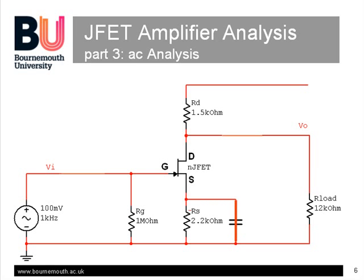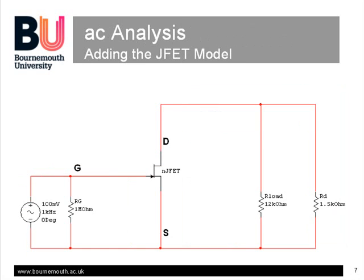Short-circuiting the source bypass capacitor shorts out the source resistor too. And finally, the power supply capacitance provides a short circuit path to signals, so we can connect the top of the drain resistor down to ground. We are left with this circuit configuration, with the drain resistor in parallel with the load resistor.